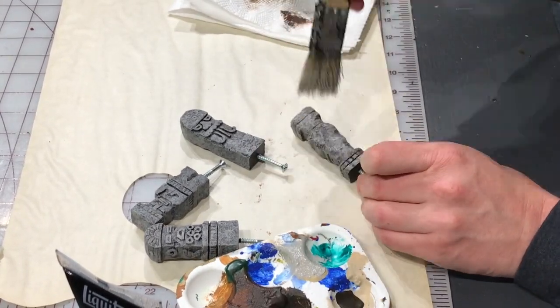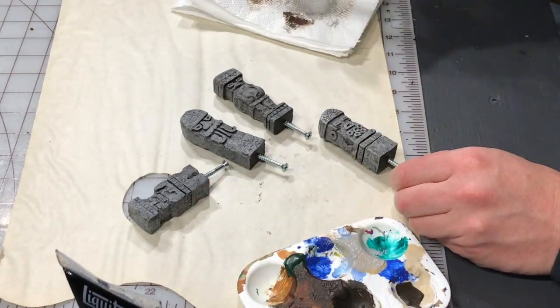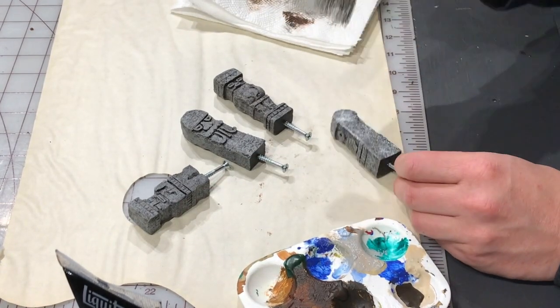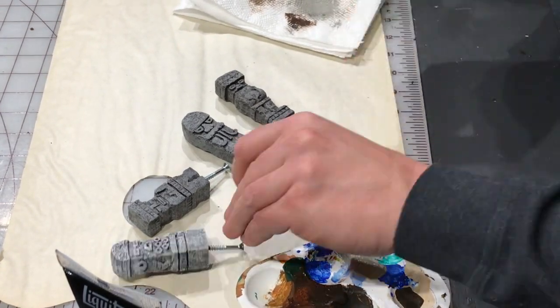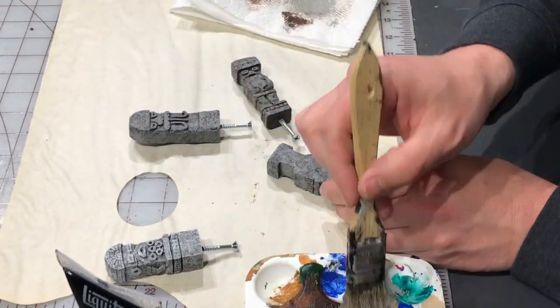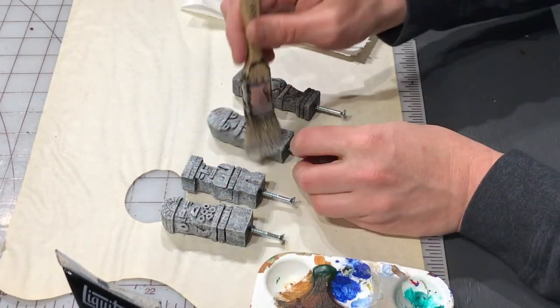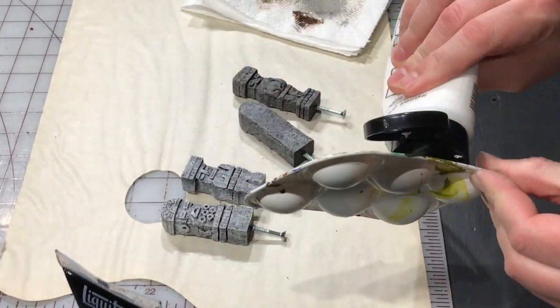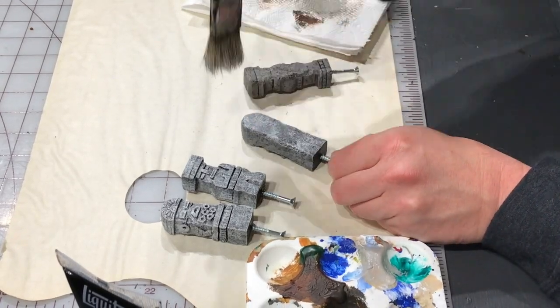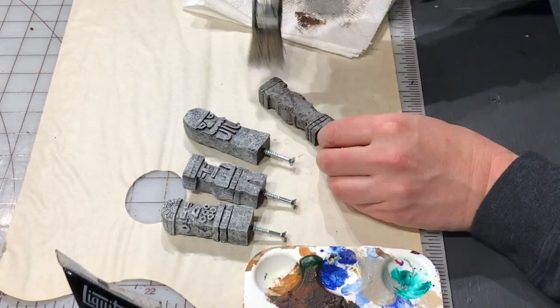Once the gray is done, I'm coming back with a white paint and doing a little bit lighter stipple, but adding that same white stippling in to make it look like the granite speckles that you would see in stone. They look a little bit light right now, but the next step will be a black wash and that will tone down the brightness of the piece.